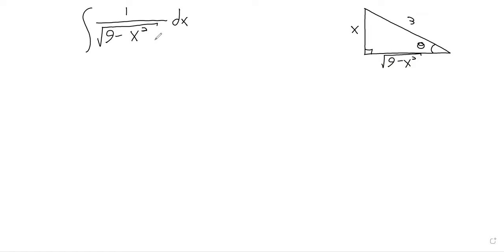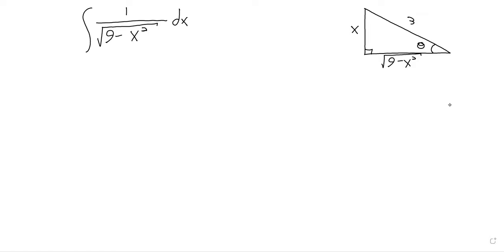Now that we've stated what we're trying to do and why, this whole thing might be somewhat less random. Our next goal should be to get x equals some kind of trig function, so we can plug it into the integral and hopefully get the square root of the square we're looking for. There are six trig functions, but we certainly don't want anything that involves that messy square root.